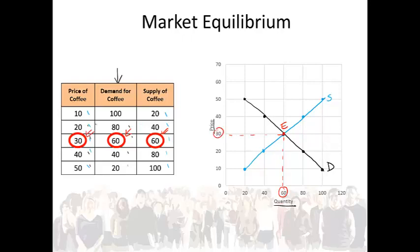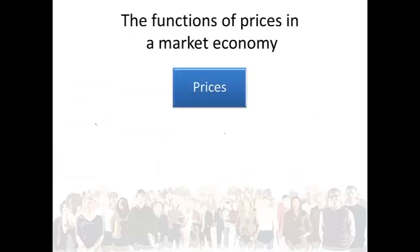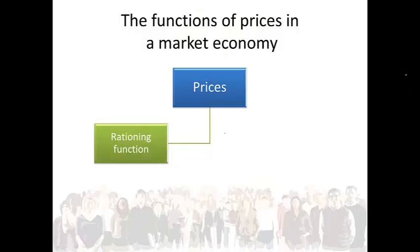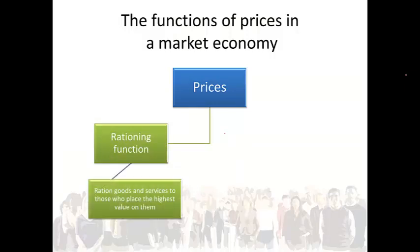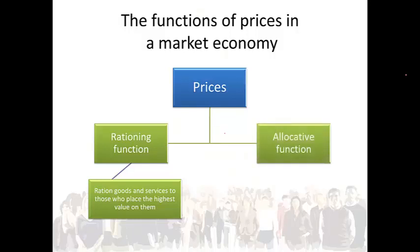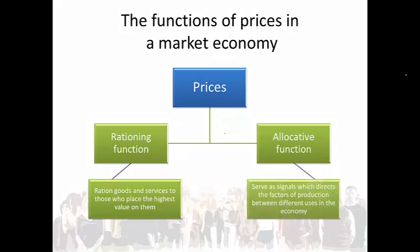Prices serve two functions in the economy. First is the rationing function: the rationing function allows goods and services to go to the people who place the highest value on them. Secondly is the allocative function: the allocative function serves as a signal that directs factors of production between different uses in the economy.